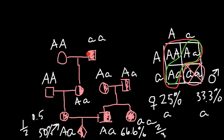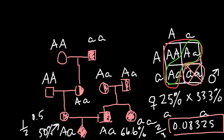Because the probability of getting the recessive allele from the mother and the probability from the father are independent, and we need both to happen simultaneously in one child, we multiply them: 25% times 33.3% equals approximately 0.08325. This is the probability for the child to inherit this genetic disorder — about 8%. Let's check: 1 divided by 0.08325 gives us 12, so the answer is 1/12.